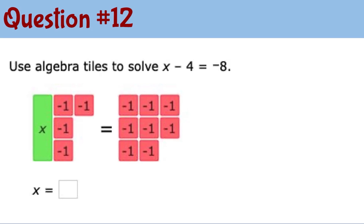For question number 12, we can take out the same amount from each side of the equation — I take out 4 from the left and also 4 from the right. On the left side we have the x remaining tile, and on the right side we have 4 negative 1 tiles. So the value for x here is negative 4.